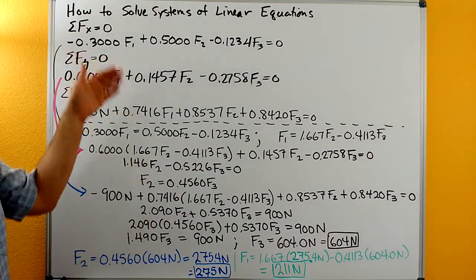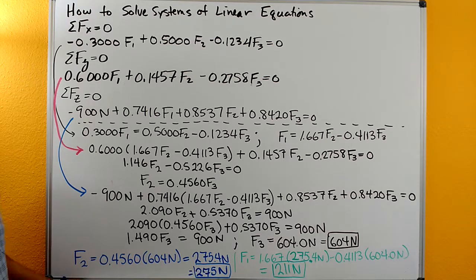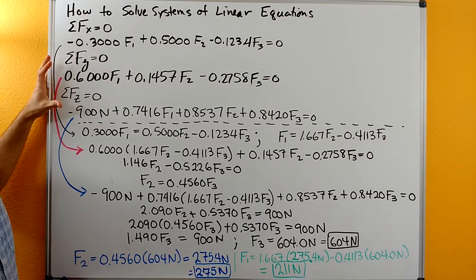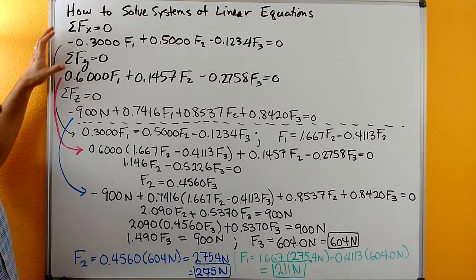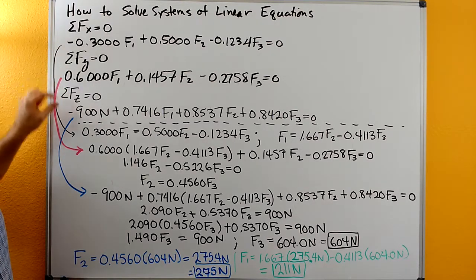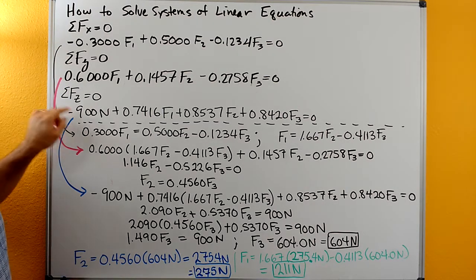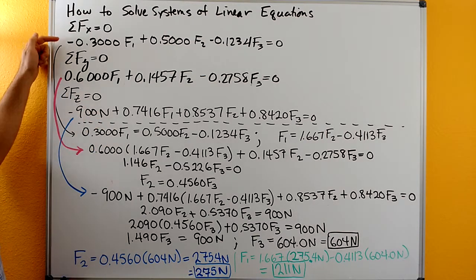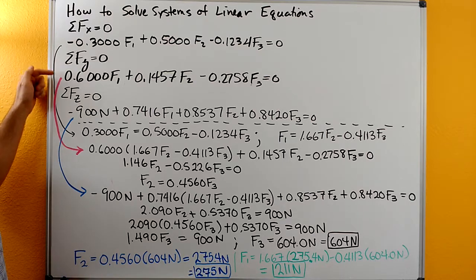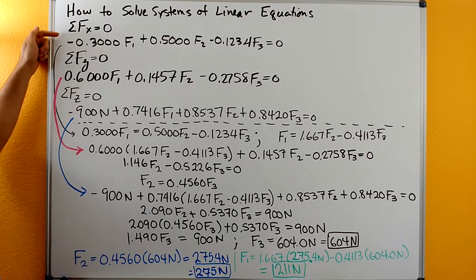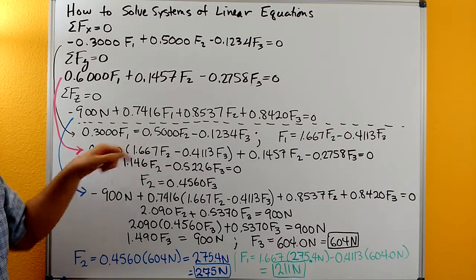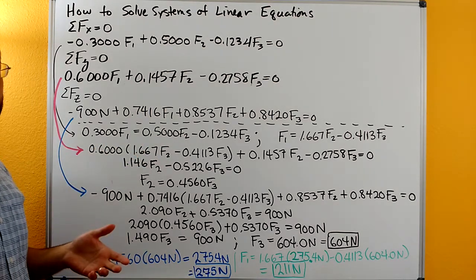We can go through this process with something called substitution. Looking at our three equations, trying to figure out if one equation is a little bit easier than the other. The sum of forces in z equation has a constant term in it, so it's a little bit longer than the sum of forces in x or the sum of forces in y. Let's start with the sum of forces in x, and then we're just going to rearrange it so that we have f1 equal to something.